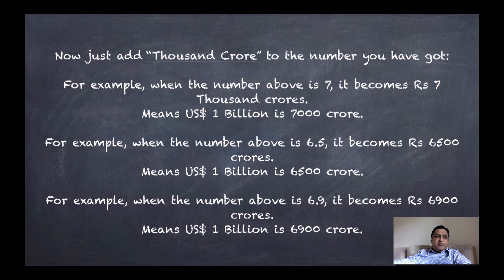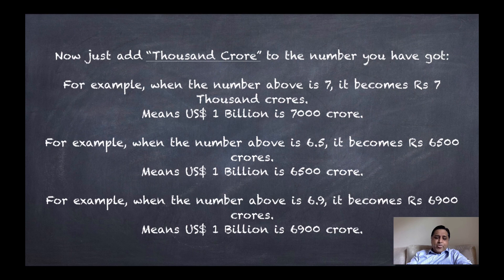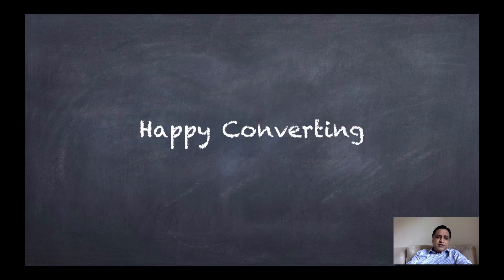If the exchange rate is 65, after dividing by 10 it becomes 6.5, so 1 billion dollars equals 6,500 crores Indian rupees. And if the exchange rate is 69, it becomes 6,900 crores — meaning 1 US dollar billion equals 6,900 crores rupees. It is as simple as that — you just divide the exchange rate by 10 and multiply by 1,000 crores. So happy converting! I hope you got the trick and will use it in future. Thanks, take care, bye.